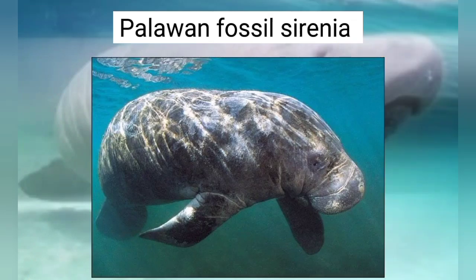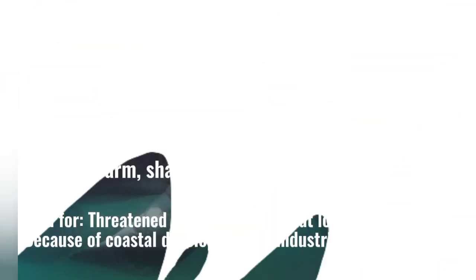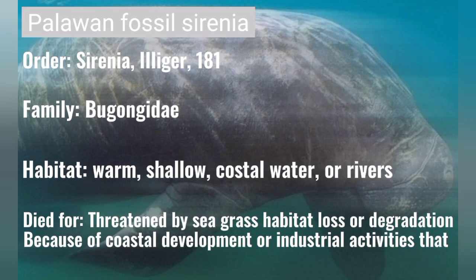Palawan Fossil Sirenia — order: Sirenia, family: Dugongidae. Habitat: warm, shallow, coastal water or rivers. Died due to threats from seagrass habitat loss and degradation because of coastal development or industrial activities.